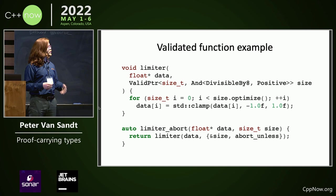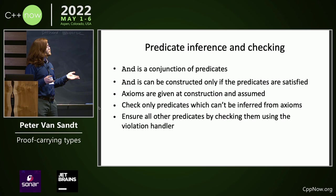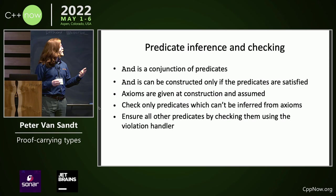An AND is a conjunction of predicates. AND is constructed only if the predicates are satisfied. The axioms are given at construction — that's how you get inference and check only once. You check only predicates which cannot be inferred from axioms, and you ensure that all other predicates are valid by checking them, and then on failure you use the violation handler.